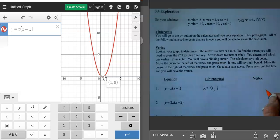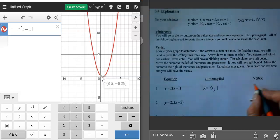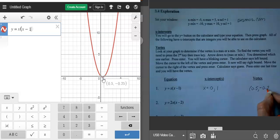If you scroll over it, it will give you the vertex. And so for the vertex on this one, it is 0.5, negative 0.25.